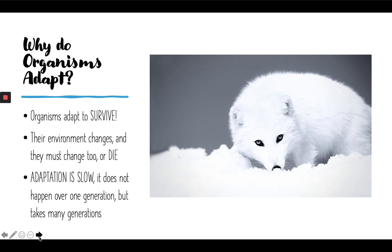So why do organisms adapt? As we already said, organisms adapt to survive. The environment is always changing, and if organisms cannot change to survive the environment, they will die. For example, an environment could get warmer or colder, or a food source could disappear. If living things cannot adapt to survive in the new environment, they will not survive.